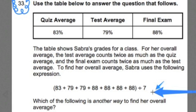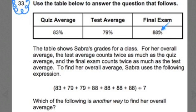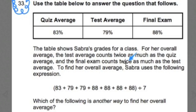So I scanned it over. Now I'm going to read it over. 'Use the table below to answer the question that follows.' We have a table: quiz average is 83%, test average 79%, final exam 88%. The table shows Sabra's grades for a class. For the overall average, the test average counts twice as much as the quiz average, and the final exam counts twice as much as the test average. To find her overall average, Sabra uses a given expression. Which of the following is another way to find her overall average?